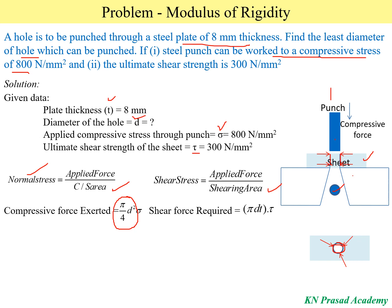Similarly, the shear force required for shearing equals shear stress τ multiplied by the shearing area. The shear forces occur along the perimeter and thickness of the hole, so the shearing area = π·d·t, where πd is the perimeter and t is the thickness. Equating the two: (π/4)d²·σ = π·d·t·τ.